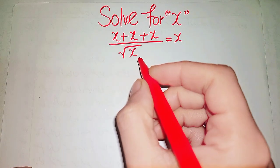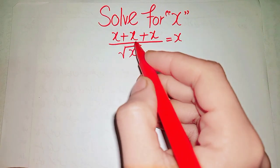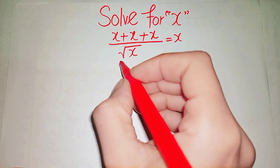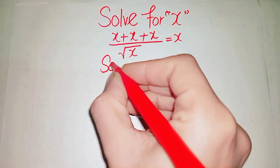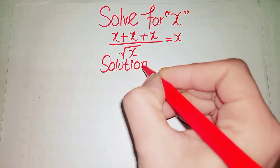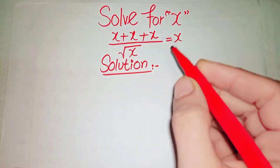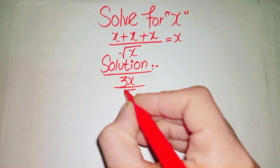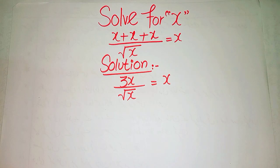Hi guys, welcome to my channel. Today we are solving this algebra equation: x plus x plus x over square root of x equals x. We can write x plus x plus x as 3x, so the equation becomes 3x over square root of x equals x.